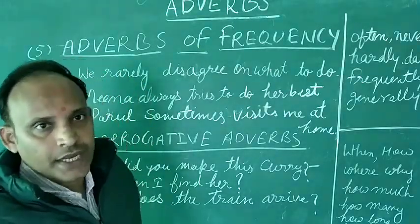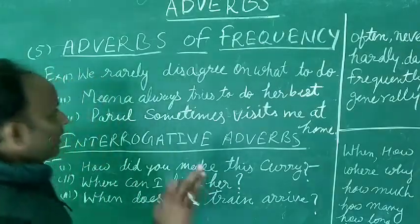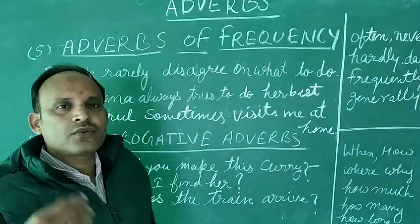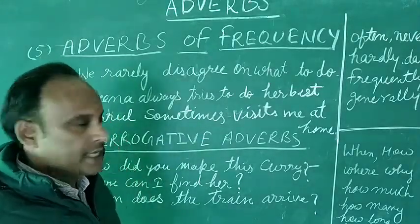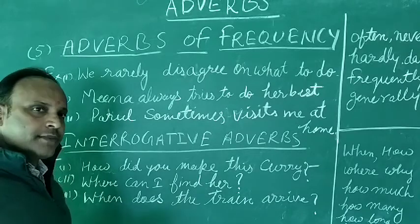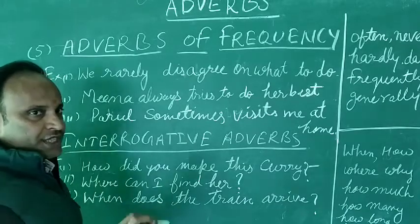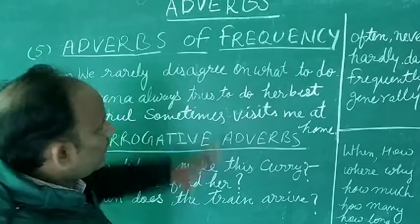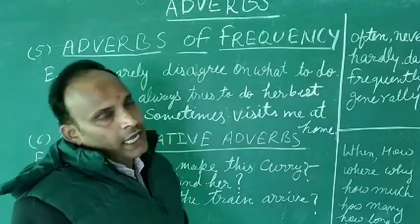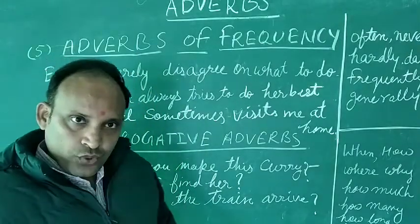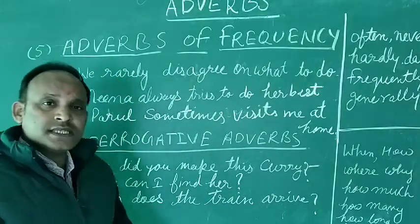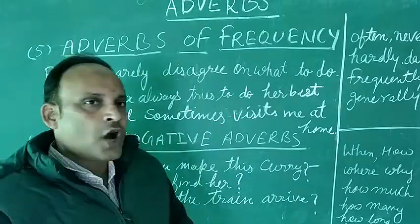Means, how many times has the action been done? In Adverb of Time, the time context is told. In Adverb of Frequency, how many times the action is done is specified. So these are the two differences between Adverbs of Frequency and Adverbs of Time. Adverbs of Frequency tell us about how often and how frequently an action has taken place — that is, how many times the action is done — and they answer the questions 'how often' and 'how frequently'.